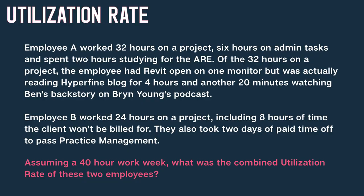Example problem: Employee A worked 32 hours on a project, six hours on admin tasks, and two hours studying for the ARE. Of those 32 project hours, they were actually reading a blog for nearly four and a half hours. Employee B worked 24 hours on a project, including eight hours the client won't be billed for, and took two days PTO. Assuming a 40-hour work week, what was the combined utilization rate for these two employees?